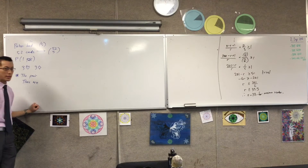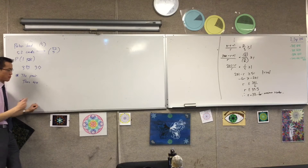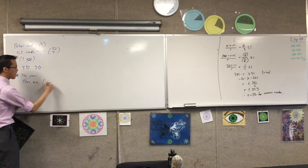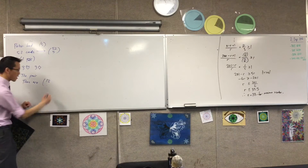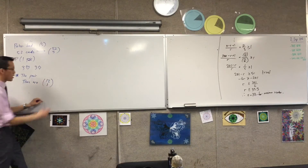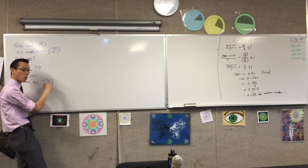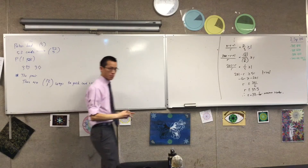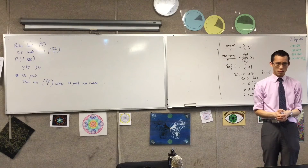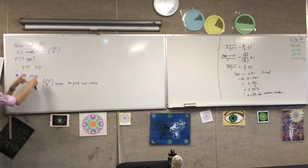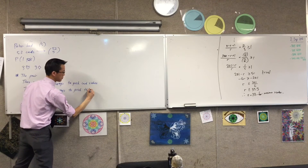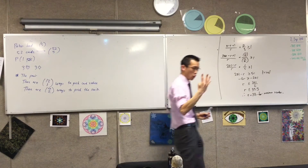How many ways to select one card value out of 13? There are 13C1 ways to pick a card value. Then I need suits. How many suits are there to choose from? There are four, but you need to choose two of those suits — so there are 4C2 ways to pick the suits. That's how many ways there are to get just a pair.